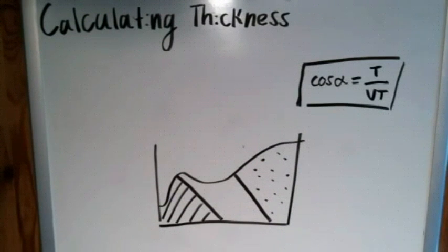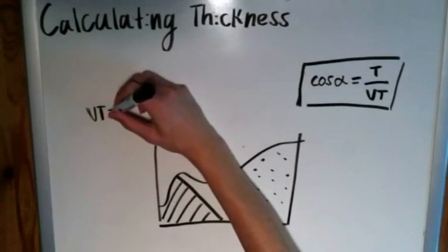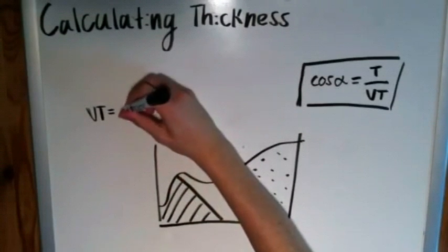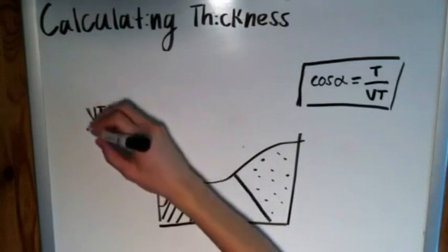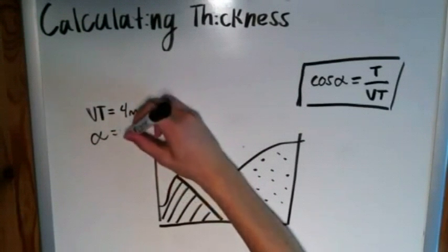All right, so in a simple test problems style scenario, let's just say we're given that VT is equal to, I don't know, four meters, and alpha is equal to 50 degrees.